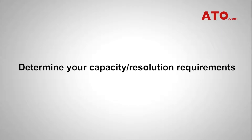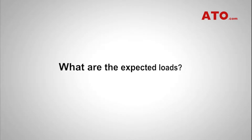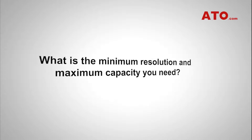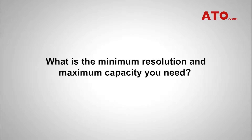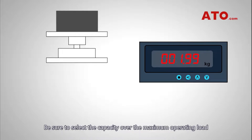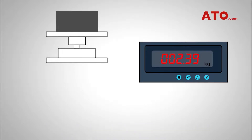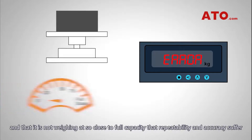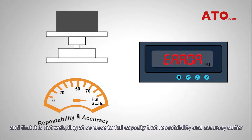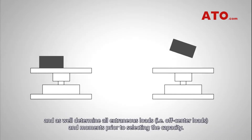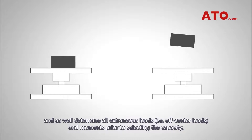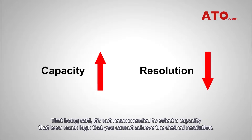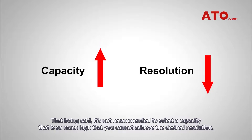Determine your capacity and resolution requirements. What are the expected loads? What is the minimum resolution and maximum capacity you need? Be sure to select the capacity over the maximum operating load so that the load cell does not risk being overloaded and that it is not weighing at so close to full capacity that repeatability and accuracy suffer. Determine all extraneous loads and moments prior to selecting the capacity. It is not recommended to select a capacity that is so much higher that you cannot achieve the desired resolution.